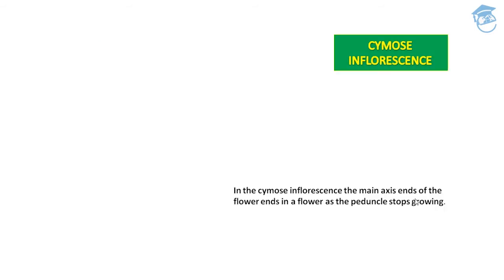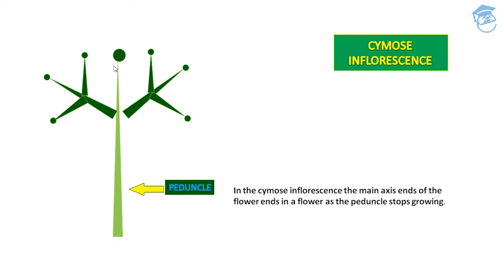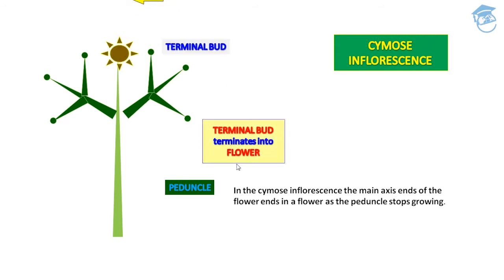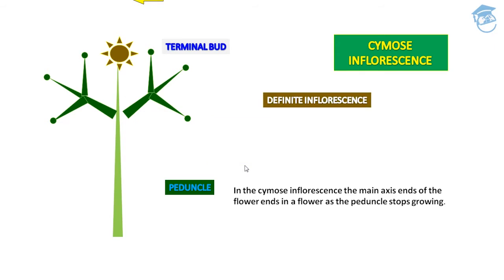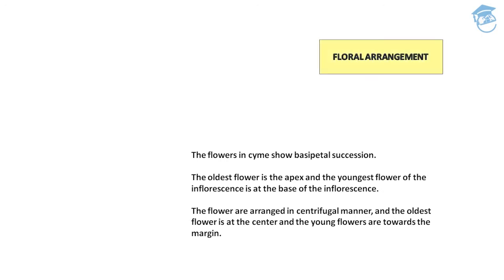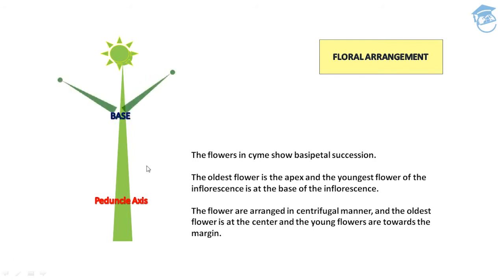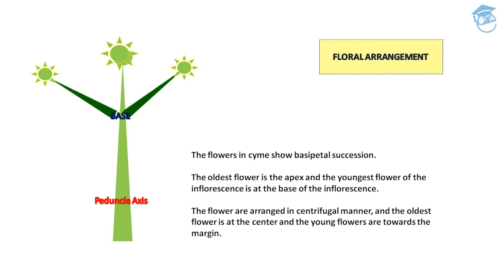In cymose inflorescence, the peduncle shows definite growth. As the peduncle stops growing, it ends into a flower — the terminal bud gets converted into a floral bud. This kind of inflorescence is called definite inflorescence. In cymose inflorescence, flowers show basipetal succession: the oldest flower is at the apex and the youngest flowers are at the base of the inflorescence.